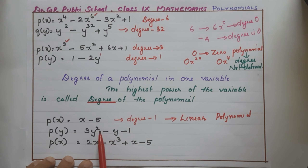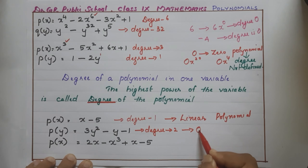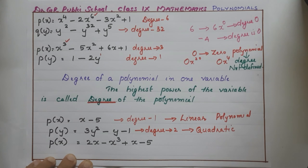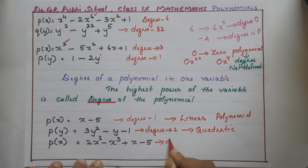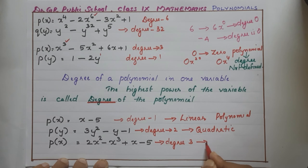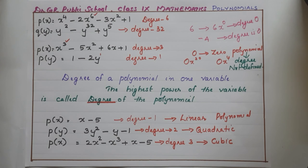Here the degree is 2, and a polynomial of degree 2 is called a quadratic polynomial. And here, for 2x² - x³ + x - 5, what is the degree? The degree is 3, and it is called a cubic polynomial. So these are the types: first degree polynomial is called linear, second degree is called quadratic, and third degree is called cubic polynomial.